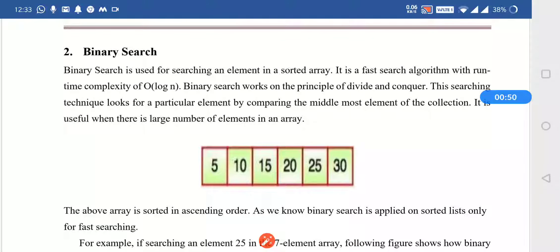But in binary search it is necessary to have the array in sorted form. So if we want to do binary search on any particular array, the first step is we have to sort the array in ascending or descending order. It is a fast search algorithm with runtime complexity O(log N). As we are dividing the array or the list into two parts and then doing the search, that's why it is the fast searching algorithm.